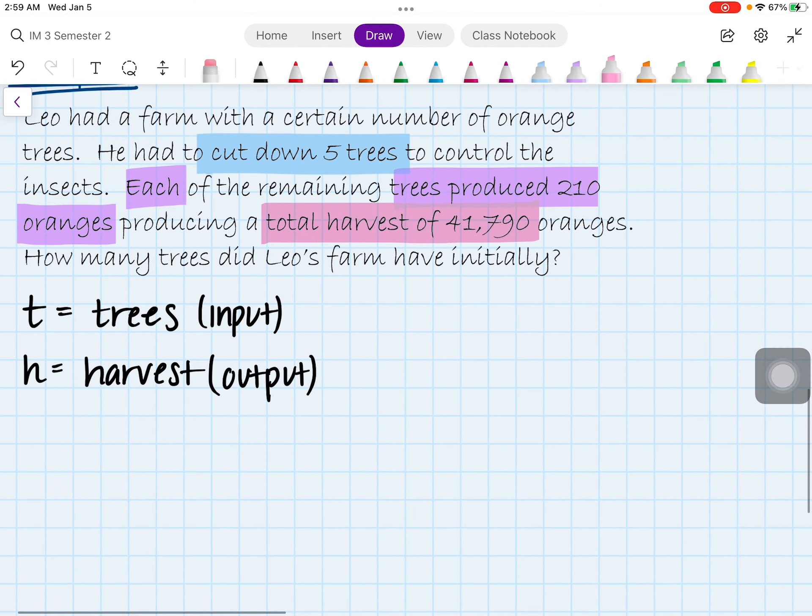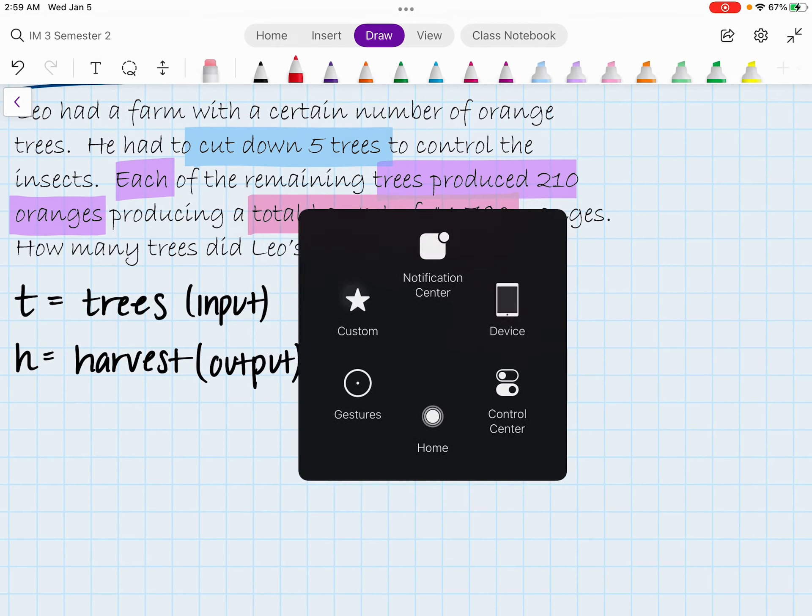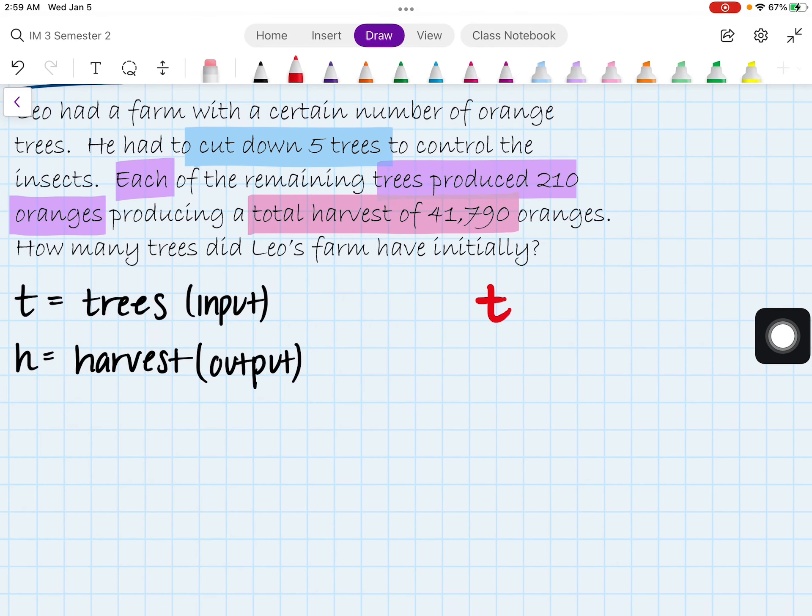So starting off with building our equation, first off, do we know how many trees we started off with? And the answer for that is we don't. That's actually what we want to find. So starting off here, I have t. I'm going to do it here. T. We don't know how many trees they had initially, so I'll just put t. We do know, however, that Leo did have to cut down five trees, which means that we actually have to subtract five from whatever trees we had in the beginning.